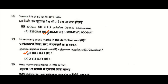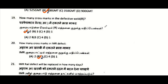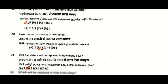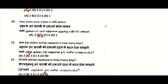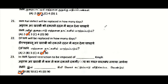Service life of 60 kg 90 UTS rail from the given option: 800 GMT. How many cross marks in a defective weld rail (DFWR): two cross marks. How many cross marks in IMR defect: three. IMR rail defect will be replaced in how many days: within three days.